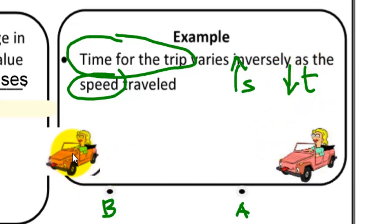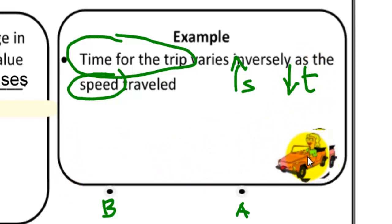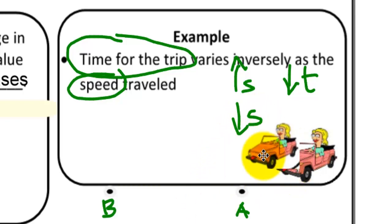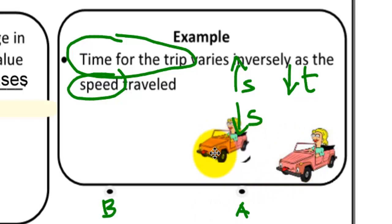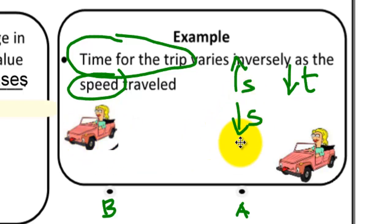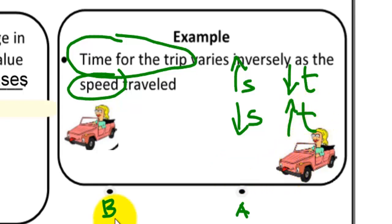Now, what if you are going to take your time and slow down — what do you think is going to happen to the time for your trip? If you decrease your speed, how long do you think you are going to take to reach your destination? You need more time. You will have more time driving to reach your destination. So this is an example of an inverse variation: if one variable increases, the other variable decreases.